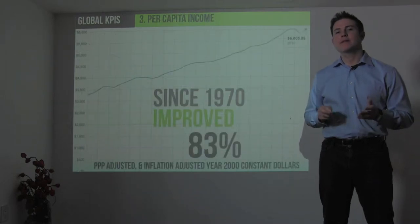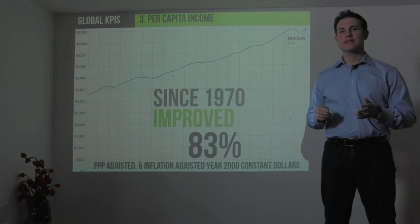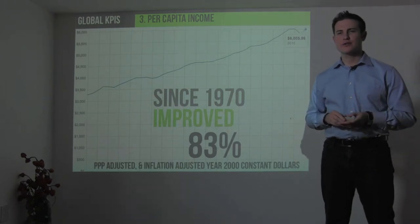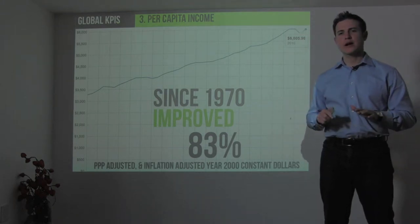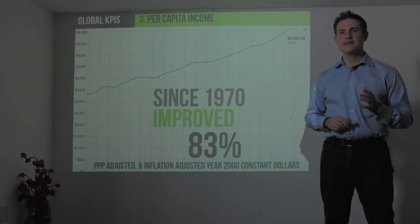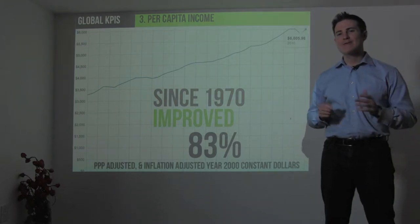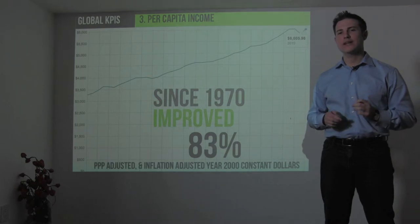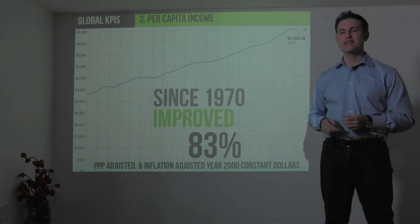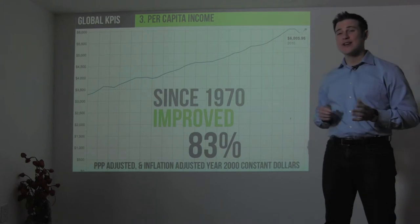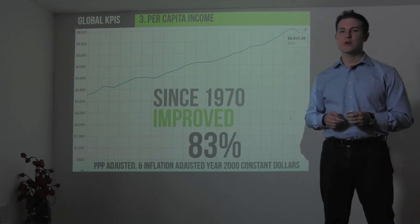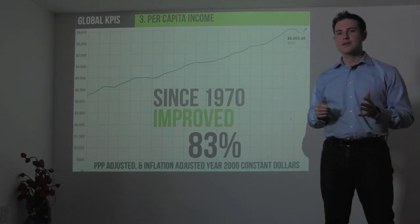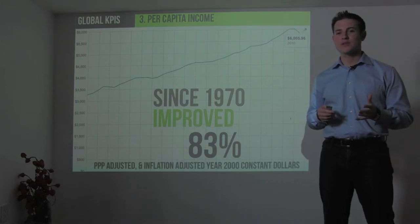Next, let's look at an economic factor: per capita income. This has been inflation-adjusted, looking at constant year 2000 dollars. Since 1970, over the last 40 years, the average human being has a per capita annual income 83% higher — going from about $3,400 in 1970 to a little over $6,000 in 2010. That's a great improvement. The reality is that although this is the mean, the median is much lower — yet the median is also improving. This is a great demonstration of human progress over time.